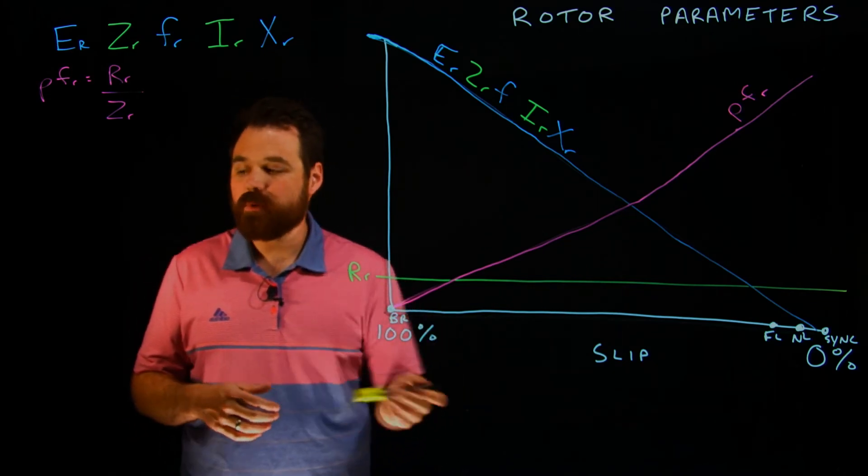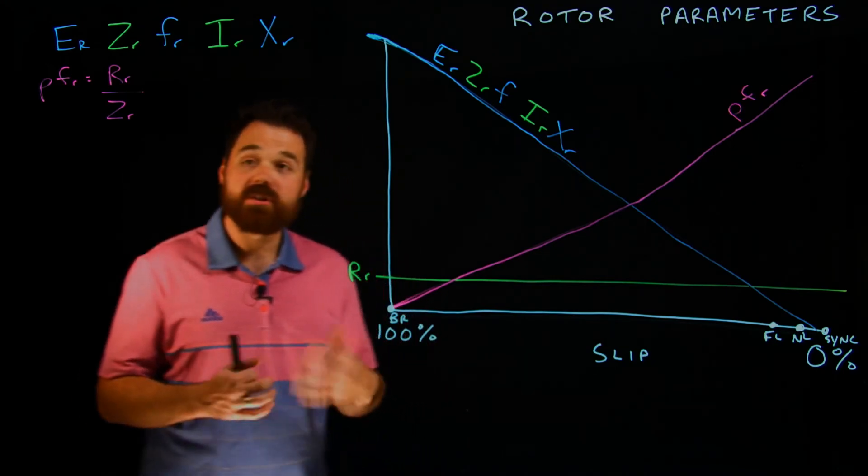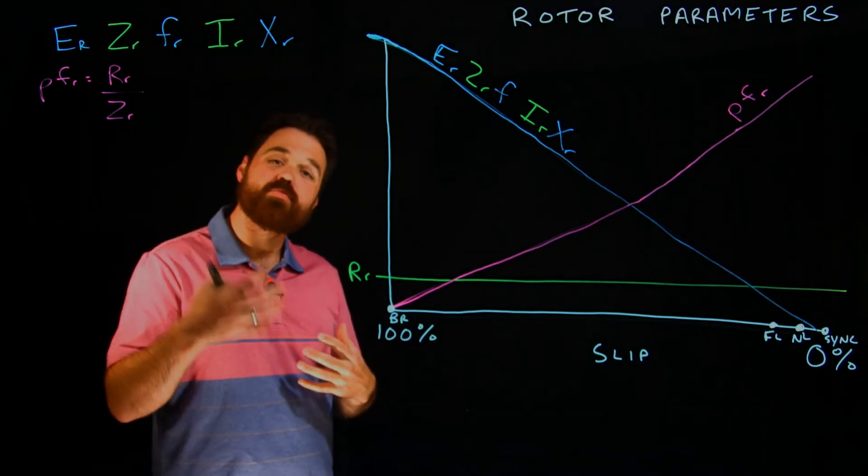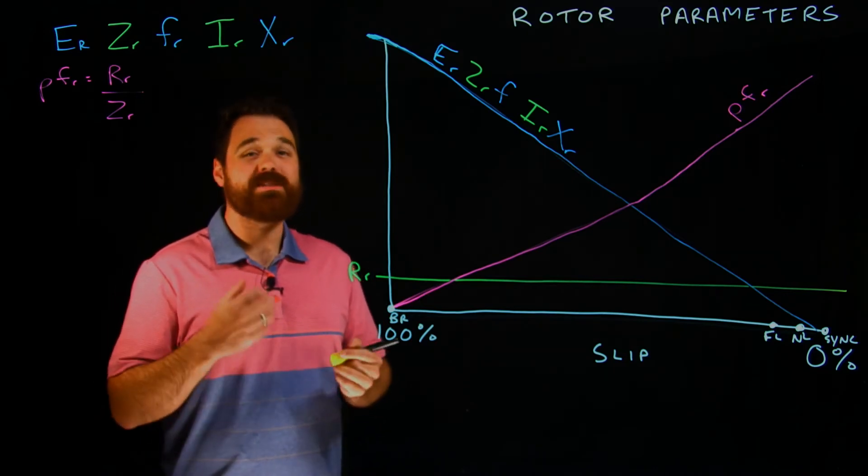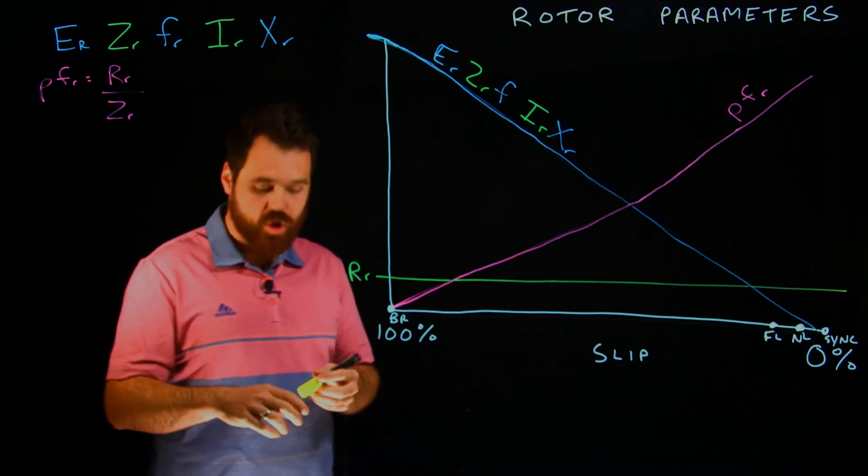There is, however, one really important thing that happens along this as well is the torque that is being produced by a motor. So the torque being produced by a motor is based upon the active current.